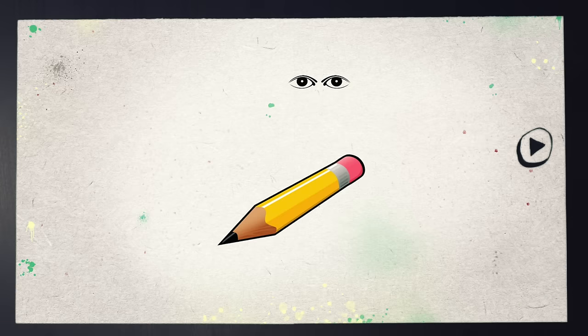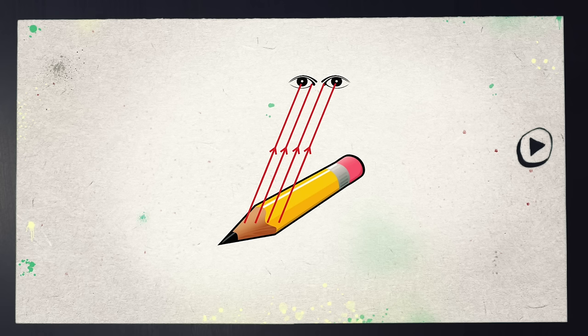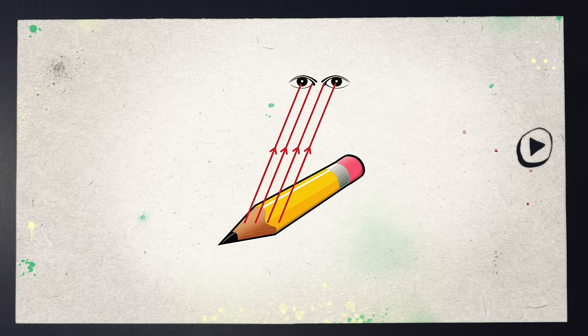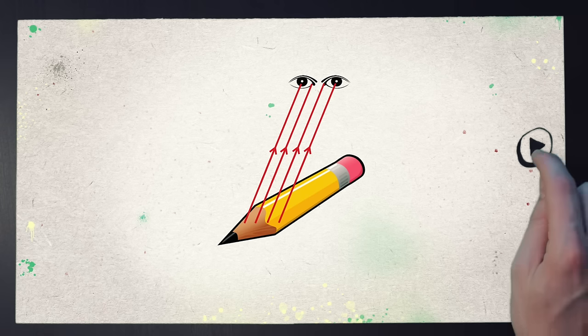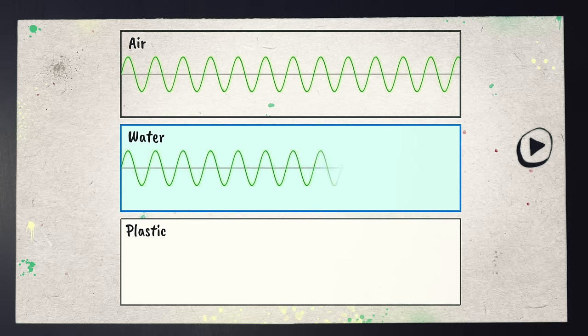Remember that you see any object because light waves are coming off that object and reaching your eye, but those light waves behave differently in different materials. They travel faster or slower depending on the material.